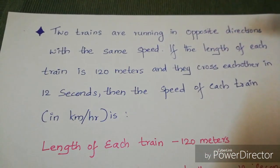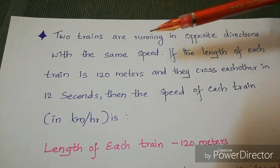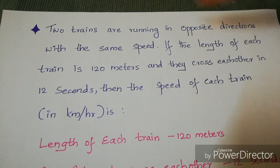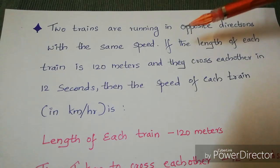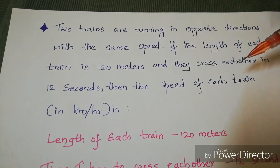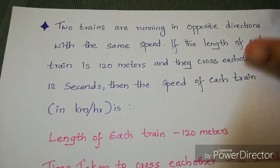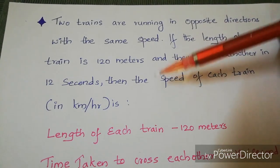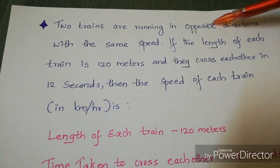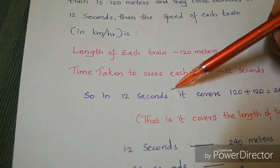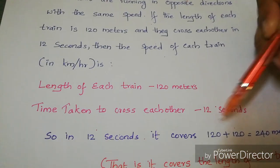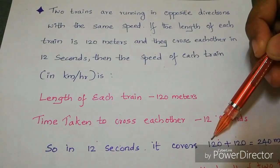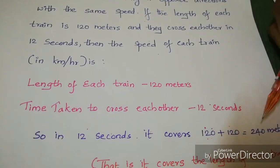Next question: two trains running in opposite directions with the same speed — each train is 120 meters long and they cross each other in 12 seconds. What is the speed of each train? When they cross each other in 12 seconds, the combined distance covered is both train lengths: 120 + 120 = 240 meters.